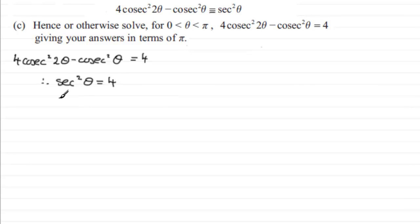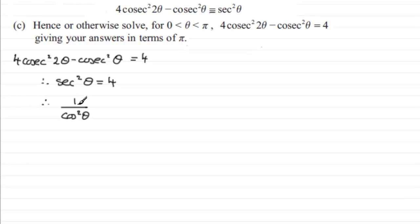Now, sec²(θ) is the same as 1 over cos²(θ). Remember, sec(θ) is 1 over cos(θ), so if you square it you get 1 over cos(θ) all squared, which is the same as 1 over cos²(θ). So we have 1 over cos²(θ) equals 4.